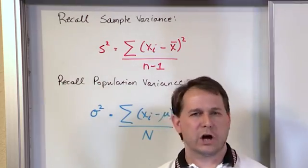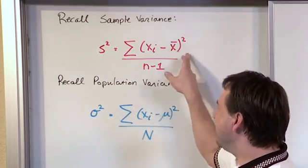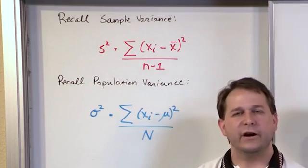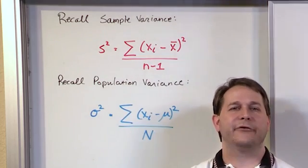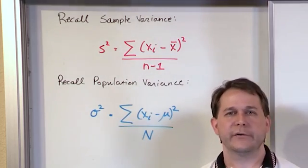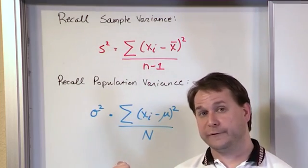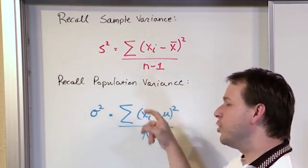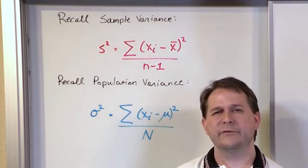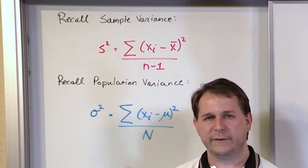But the problem, if you want to call it a problem, is that because we squared everything, it does measure in a relative sense how spread the data is. You can look at two variances of two different data sets and figure out which one's more spread by looking at which one's larger. But the problem is we've squared all of our data points.